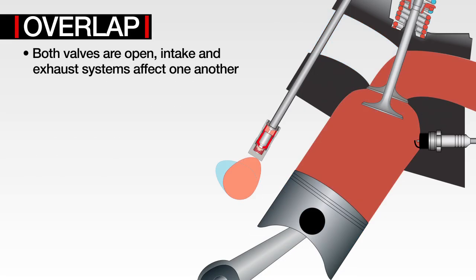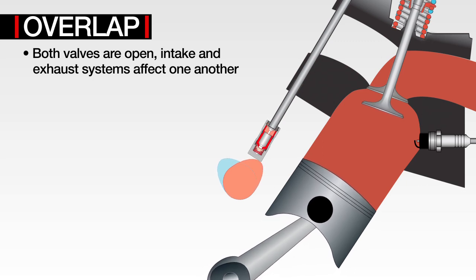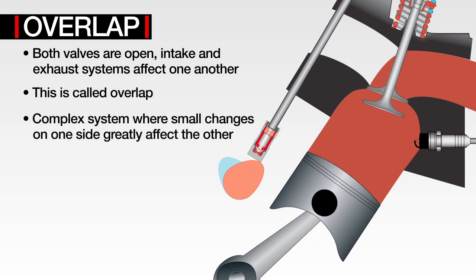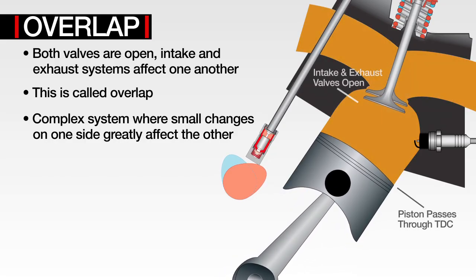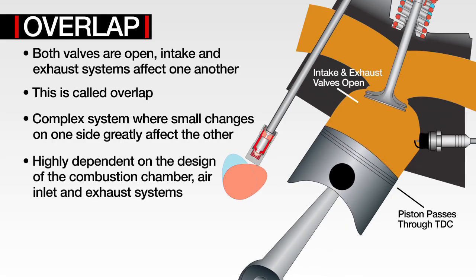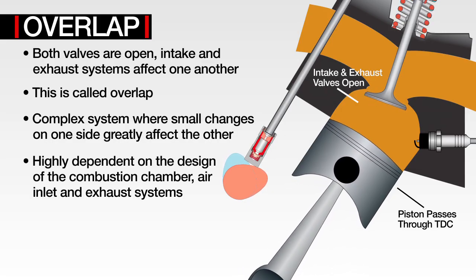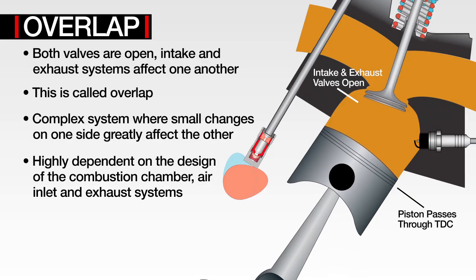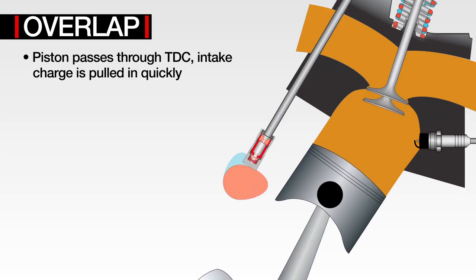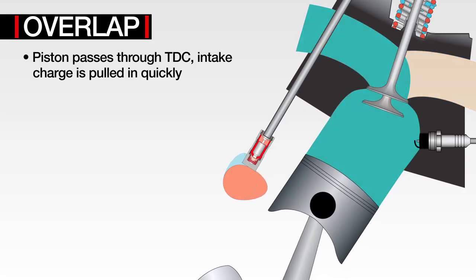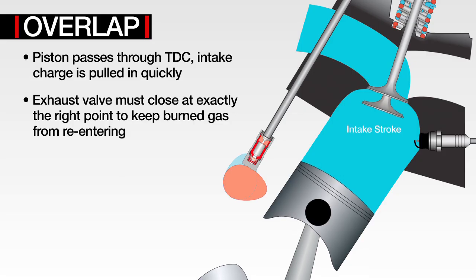Finally, we will discuss overlap. During this period, both valves are open, allowing the intake and exhaust systems to affect one another. This is called overlap. Here, the intake and exhaust systems communicate, resulting in a complex system where small changes on one side can greatly affect the other. An engine's overlap requirements are highly dependent on the design of the combustion chamber, air inlet, and exhaust systems. Once the piston passes through top dead center and starts back down, the intake charge is pulled in quickly, so the exhaust valve must close at exactly the right point to keep burned gas from re-entering while not allowing too much of the good inlet charge to escape with the exhaust.